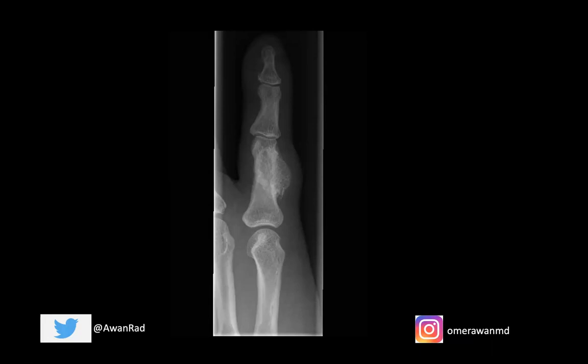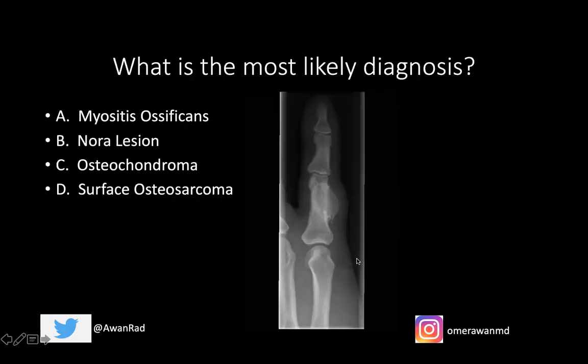Hello and welcome to week 12 of MSK unknown case series. This is a fantastic case. We have a frontal view of the pinky — an X-ray radiograph — and we have an abnormality that's pretty obvious at the fifth proximal phalanx. The question is: what's the most likely diagnosis? Is this myositis ossificans? Is this a Nora lesion? Is this an osteochondroma? Or is this a surface osteosarcoma?